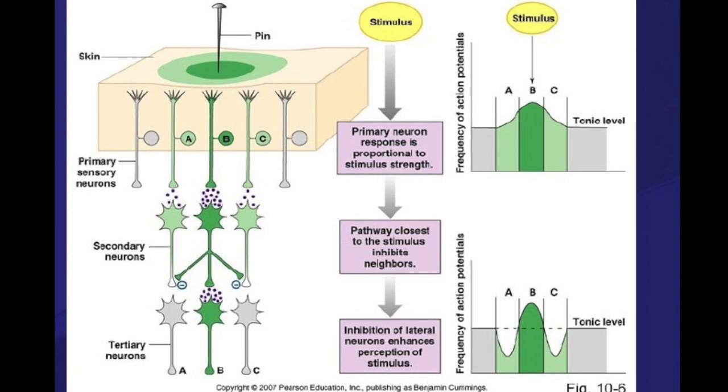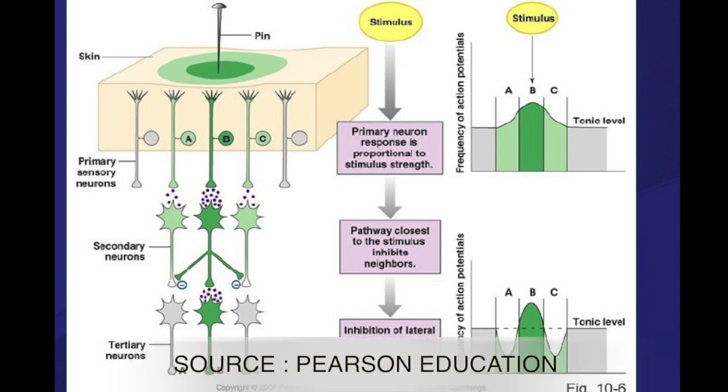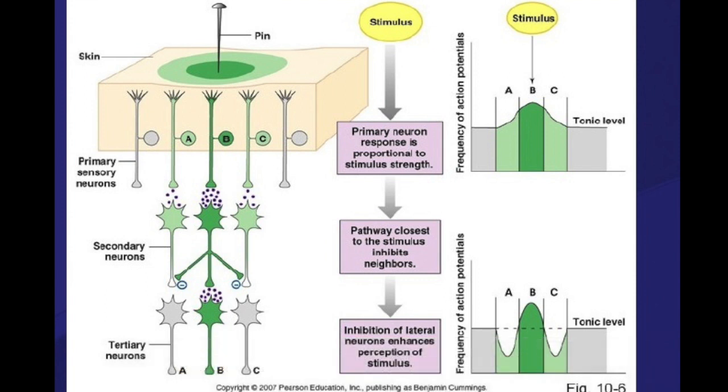As you can see in this diagram, which illustrates the concept of lateral inhibition, you can see a pinprick on skin. The darker green is the point of stimulation, while the light green are the edges where stimulation is not much more pronounced.